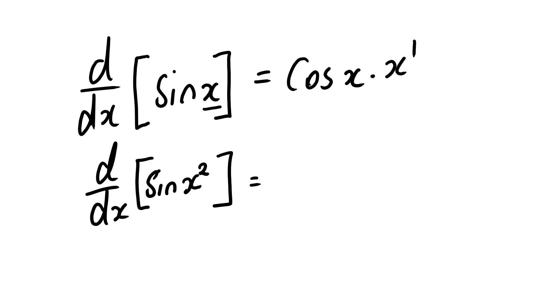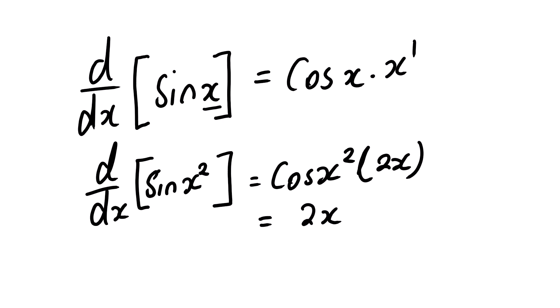The derivative of sin(x²) will be cos(x²) multiplied by the derivative of x², which is 2x. Simplifying this, you are going to have 2x cos(x²).